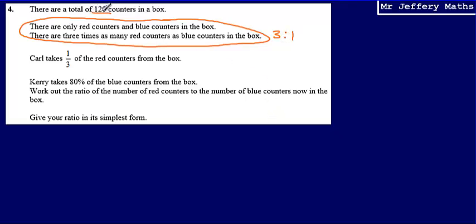Sharing out 120 in the ratio 3 to 1, we can say that's 120 divided by 4 to get 30. Then multiplying that by 3, we know that there are 90 red counters and 30 blue counters.